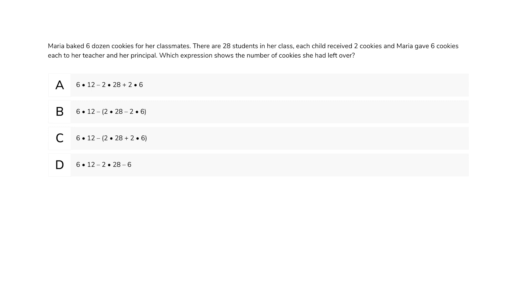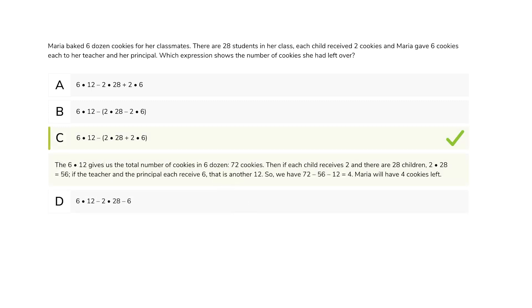Then, we need to determine how many she gave away. If each child receives two and there are 28 children, two times 28. And if the teacher and the principal each receive six, that is another six times two. So, we have six times 12 minus the quantity of two times 28 added to two times six. So, this is the best choice. Nice.